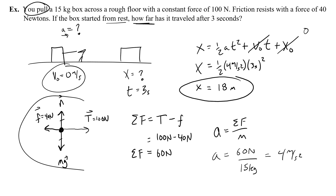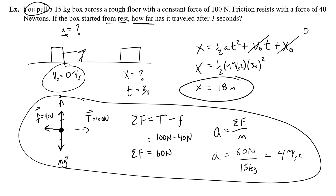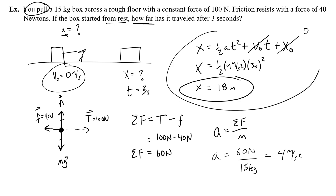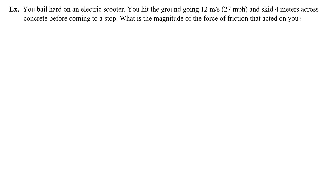We found the acceleration by looking at a free body diagram and the net force, then figured out how far the box went using the motion equation. Let's do another problem. You bail hard on an electric scooter, hit the ground going 12 meters per second — about 27 miles per hour — and skid 4 meters across concrete before coming to a stop. What is the magnitude of the force of friction that acted on you?